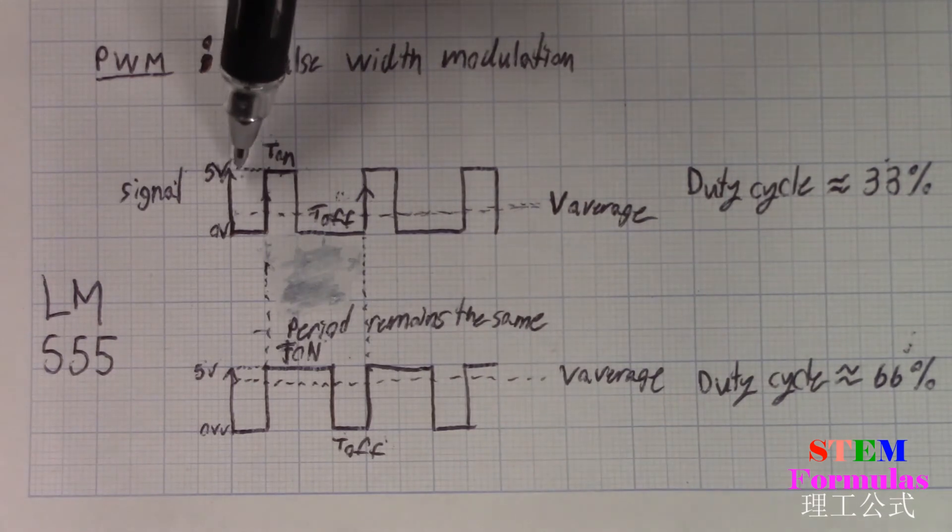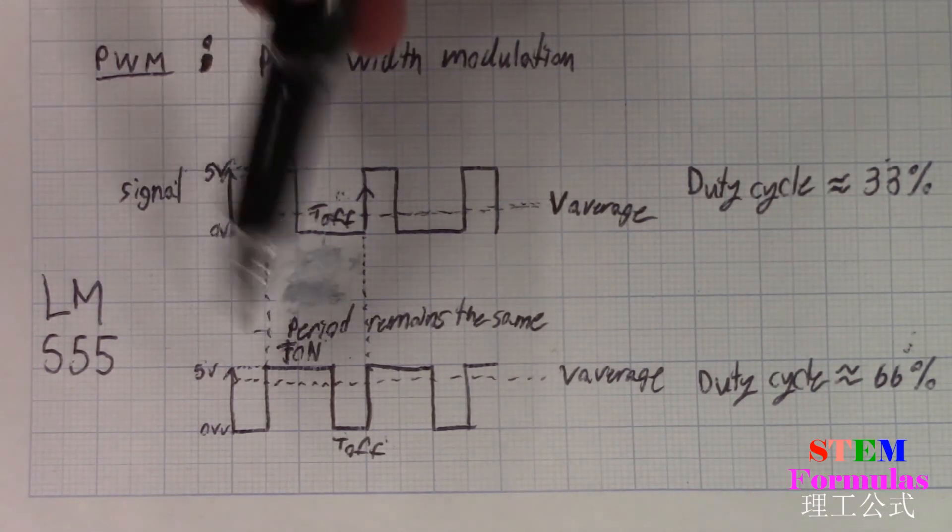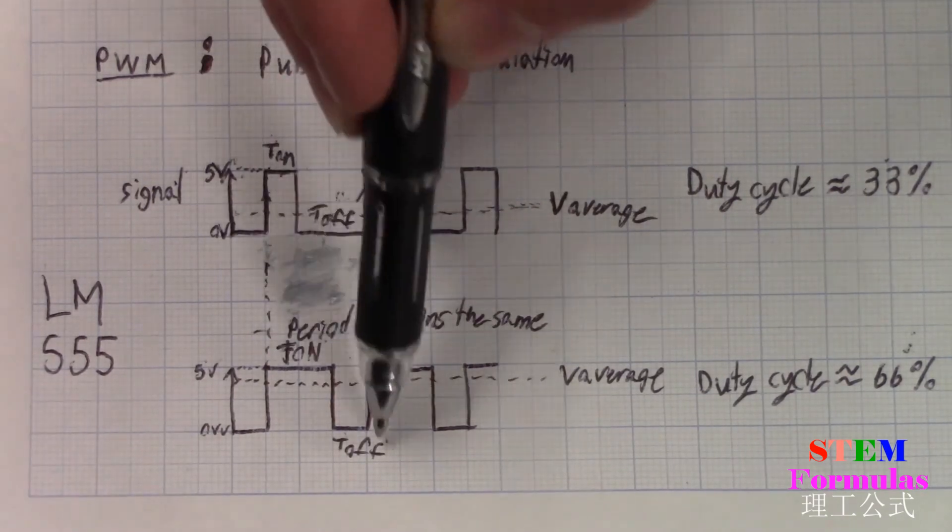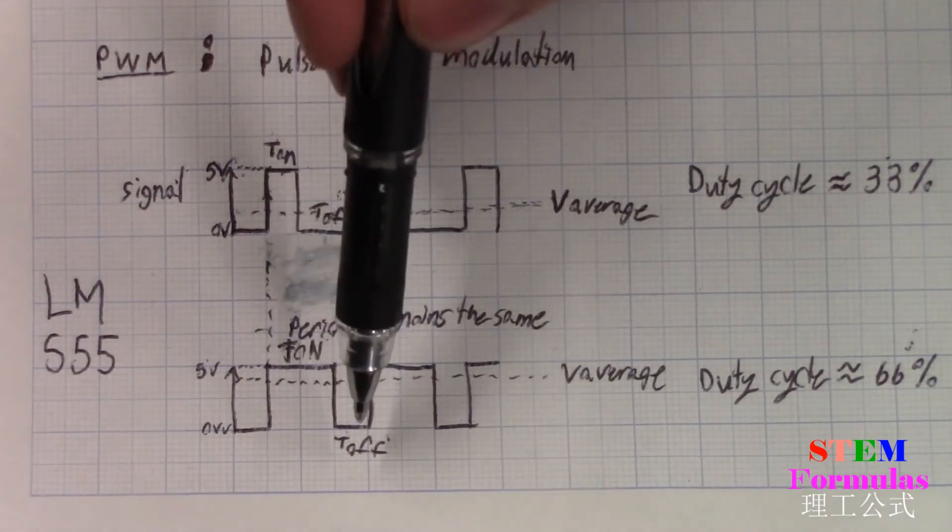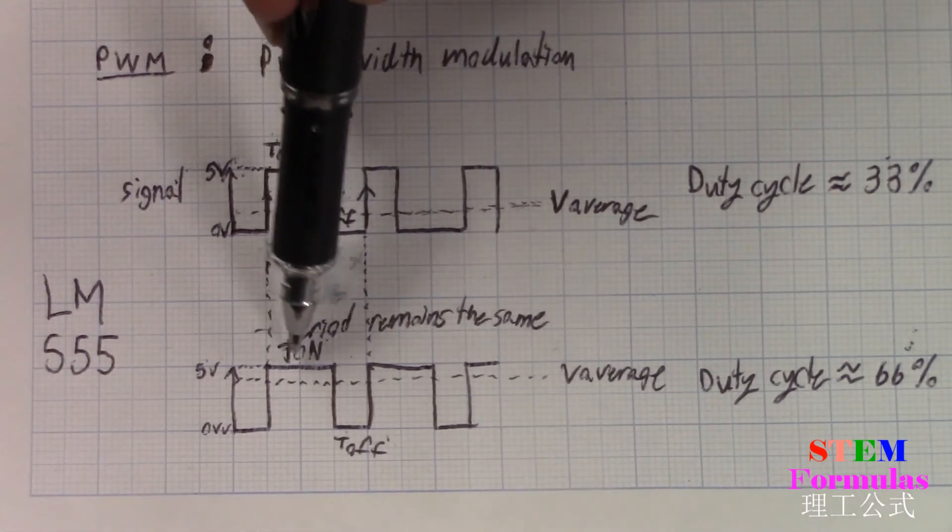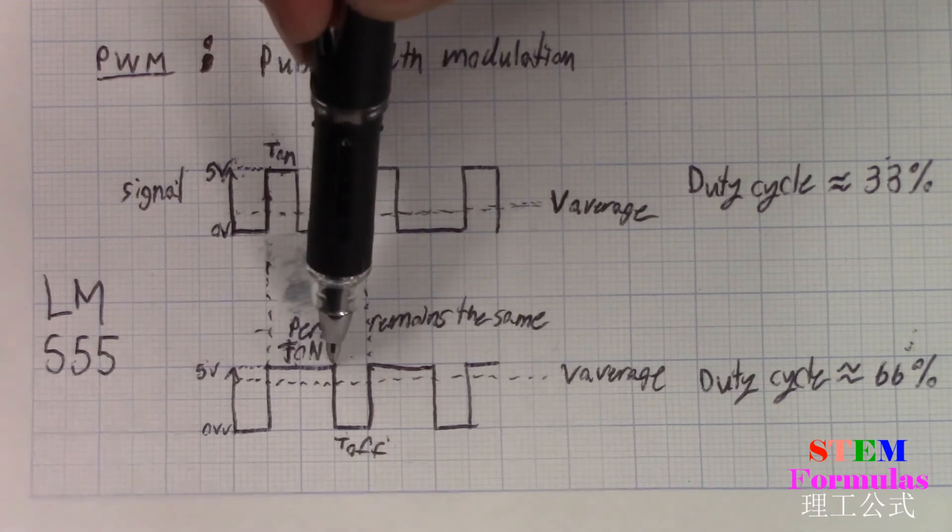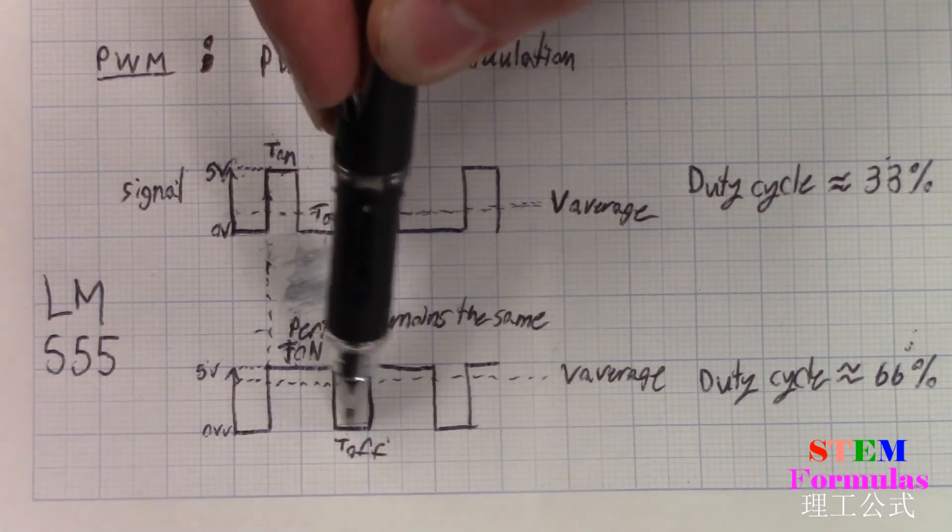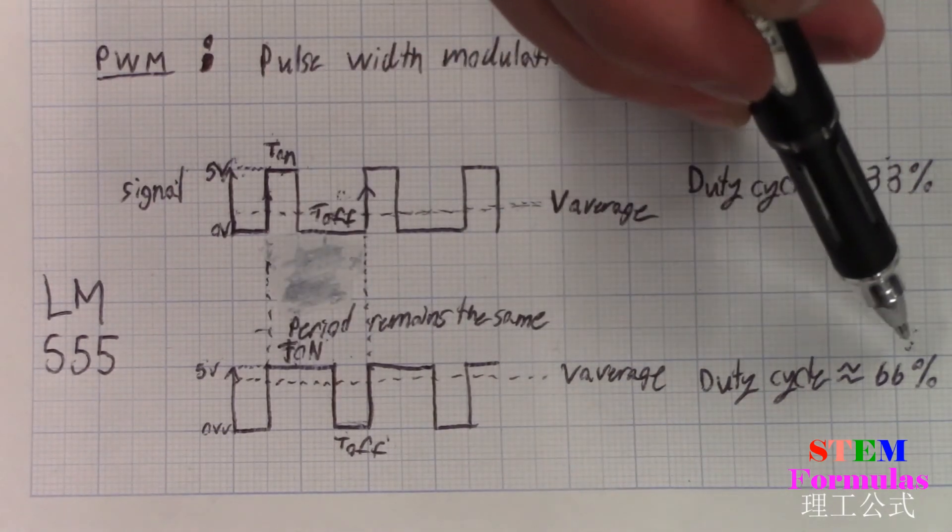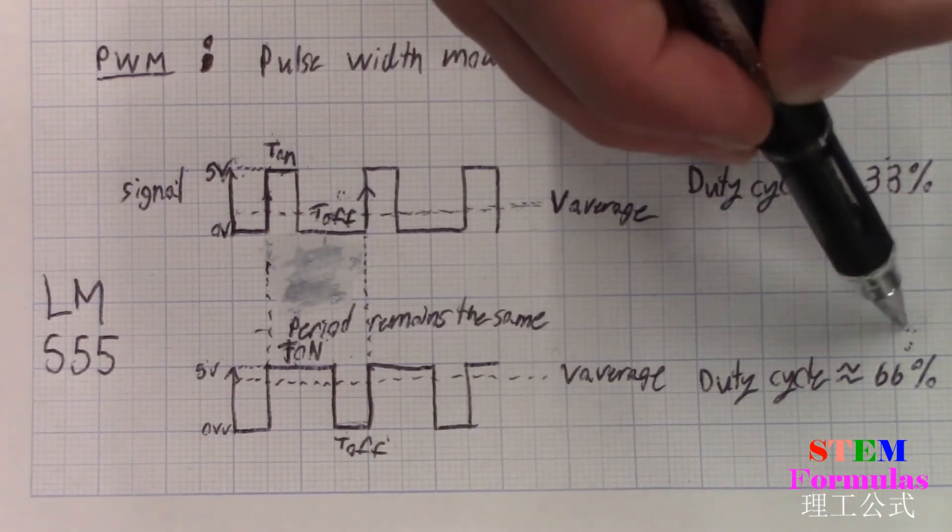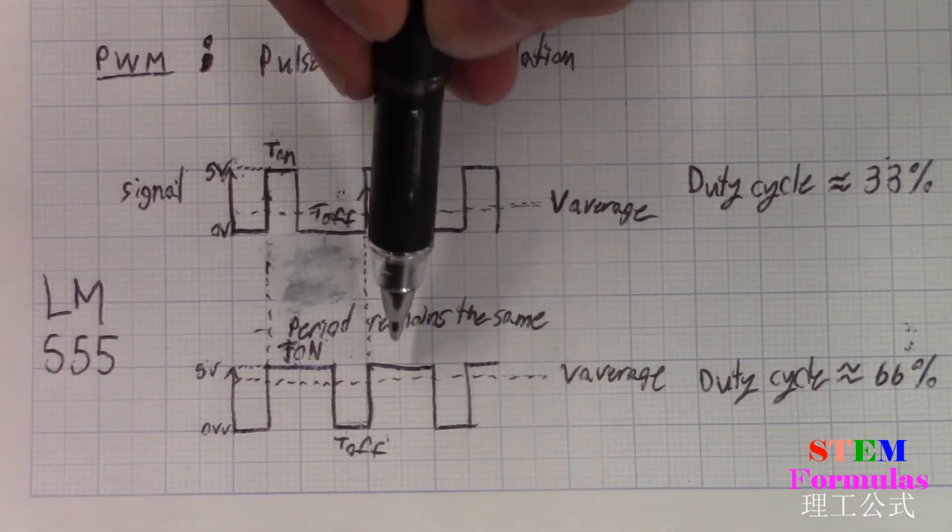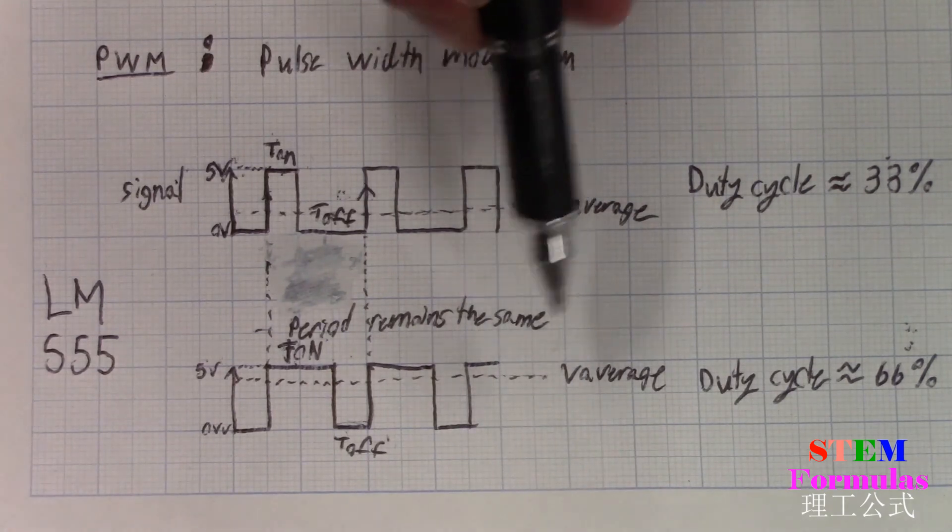Now, if I turn the potentiometer more than half, you're going to see something like this. The T on will increase, while T off will decrease. That makes the duty cycle twice as big in this case. T on remains higher for a lot longer, and T off for a lot shorter. That makes duty cycle about 66%. 66% of 5 volts will give you the average that your motor will see. That's how you're able to control the speed of your motors.